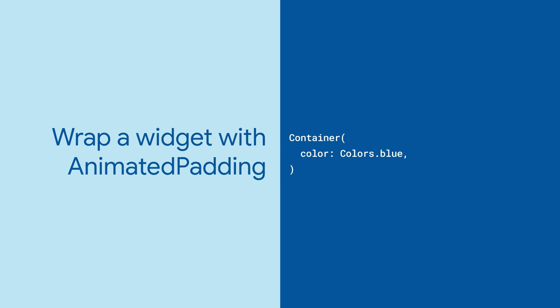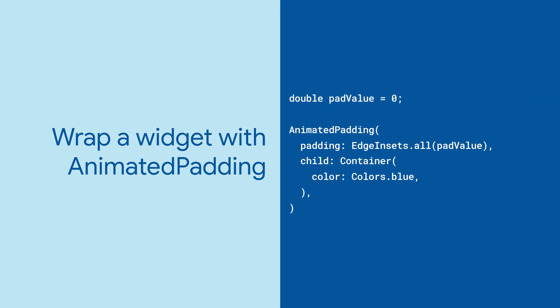First, wrap the widget you want to pad with Animated Padding. Give the padding inset a variable of type double, and you'll use this to trigger the animation when its value changes.